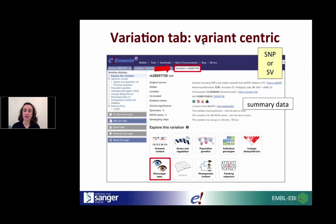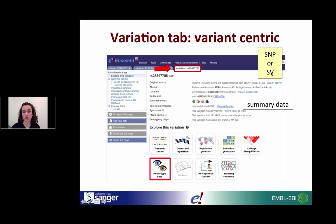In addition to the Location tab and Gene tab, we also have something specific to variation data called the Variant tab. It's a place where you can go and get variant-centric information. You can search for a SNP ID and get all sorts of different types of information for that given SNP. This can also be performed for structural variants — you can search for a CNV or a larger duplication and get specific information for that given region or locus.